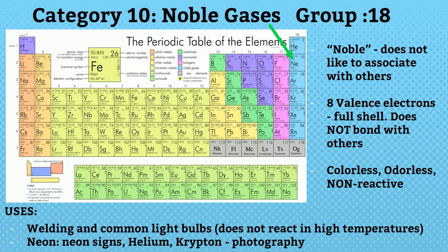Category 10: noble gases — group 18 elements, also called inert gases. They are noble, meaning they do not like to associate with others. They have 8 valence electrons so the outermost shell is full; they do not bond with others and are colorless, odorless, and non-reactive. They are used in welding and light bulbs. Helium is used in light bulbs, neon in neon signs, and helium and krypton in photography.